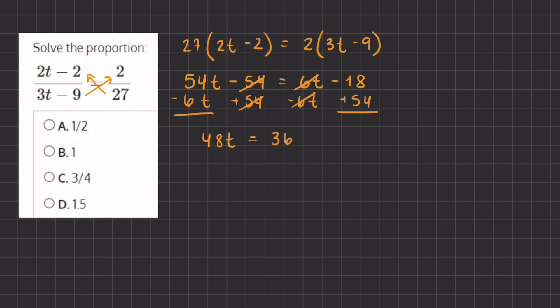Now in order to find the value of t, we're going to isolate it by dividing 48 on both sides. So we have t equals 36 divided by 48.